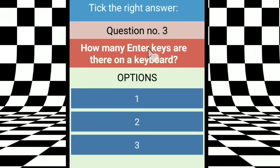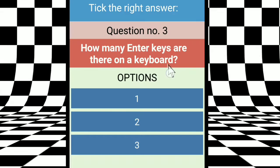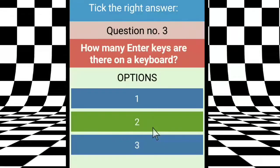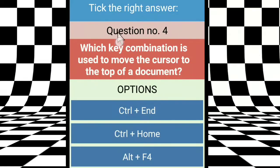Question three: how many enter keys are there on a keyboard? There are two enter keys — one on the left side of the keyboard and a second enter key on the numeric keypad. So the right answer is two.